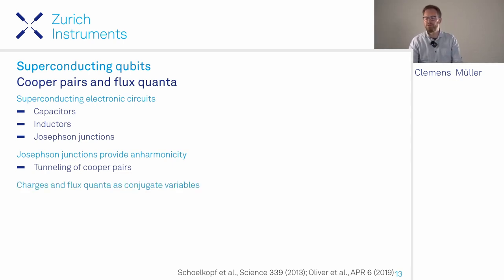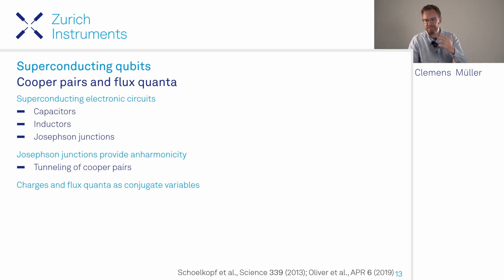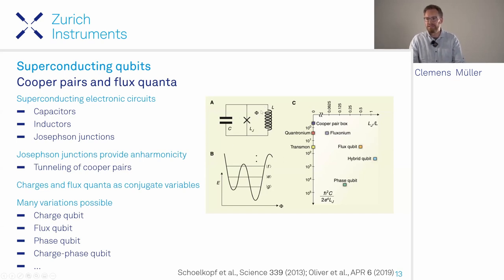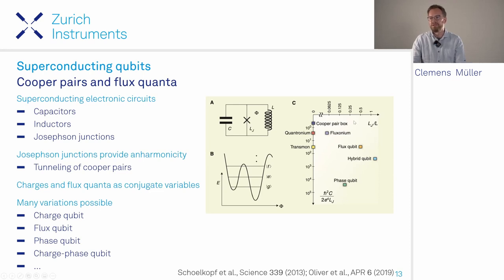We can encode qubits using Cooper pairs or their conjugate variables—flux quanta of magnetic flux penetrating structures. Depending on how you build the qubit, many types have been explored. A basic superconducting circuit has a capacitor, inductor, and Josephson junction, each with an associated energy scale. The ratio of these energies defines the different types in the zoo of superconducting qubits.